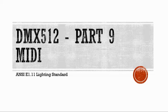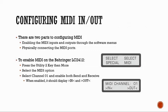Hi, this is part nine of introduction to DMX lighting and this one is going to talk about MIDI. There are two parts in configuring MIDI: enabling the MIDI inputs and outputs through the software menus, and physically connecting the MIDI ports.